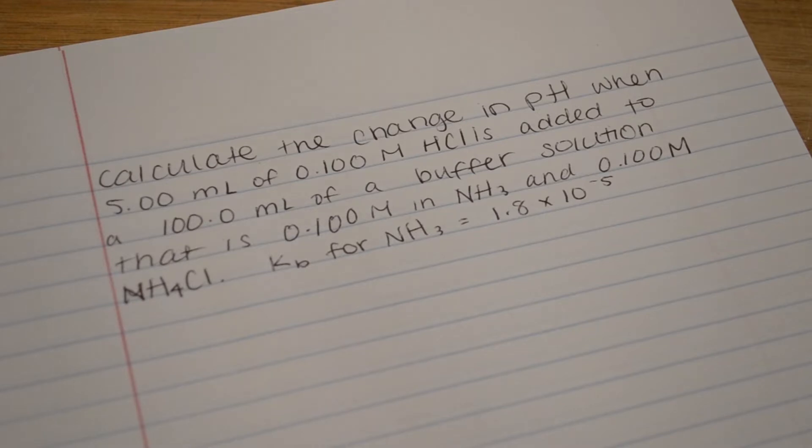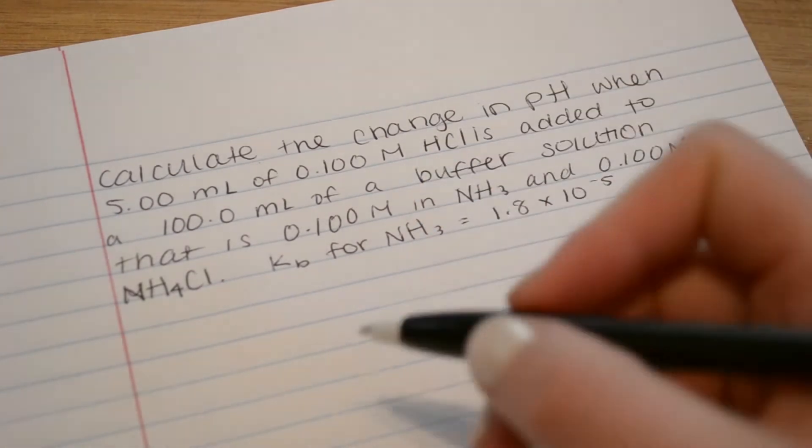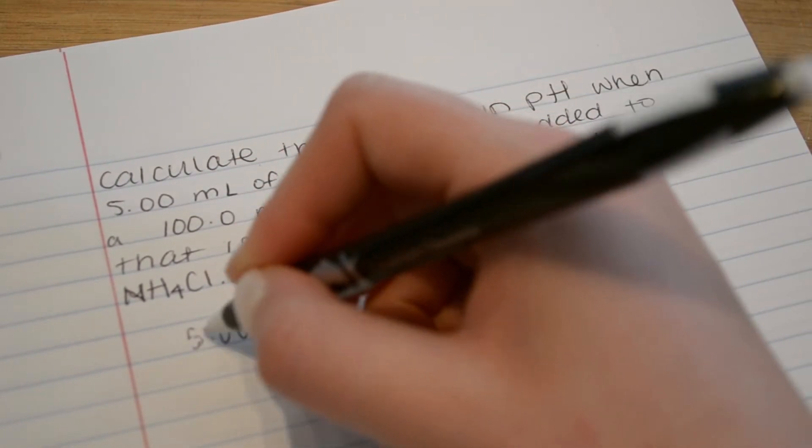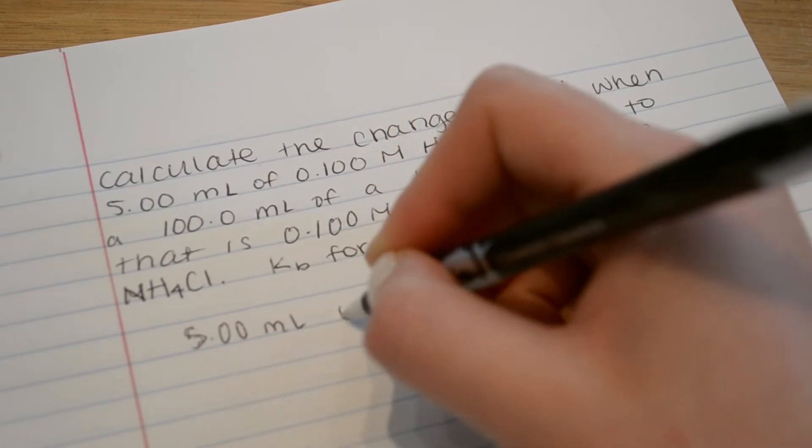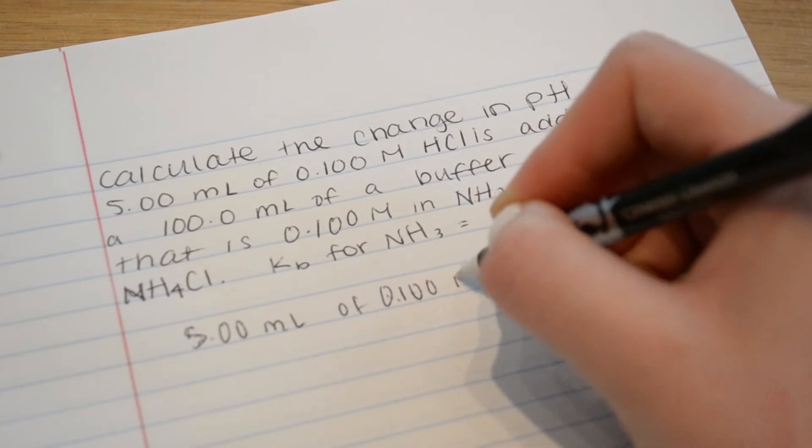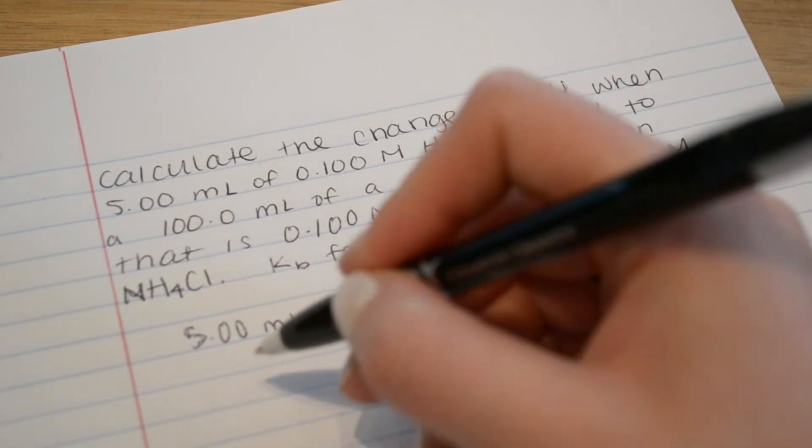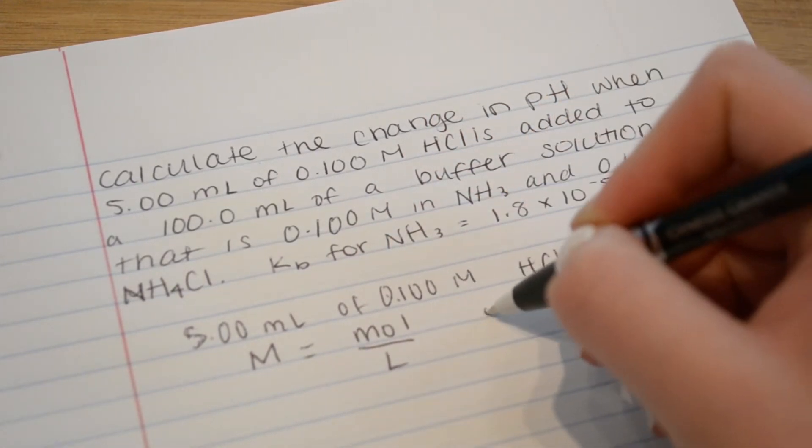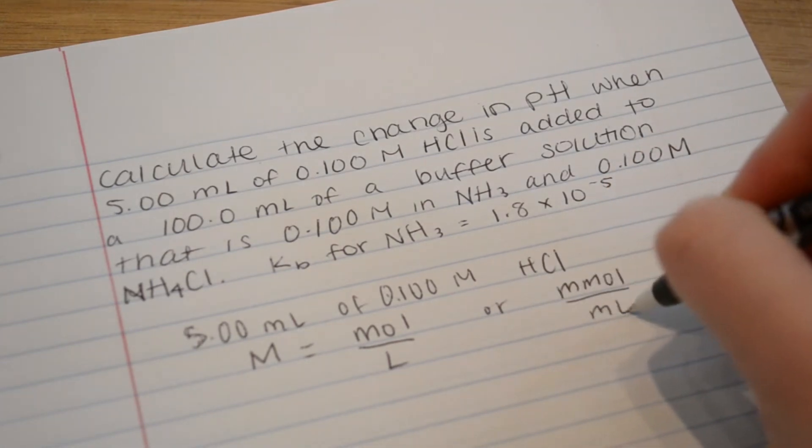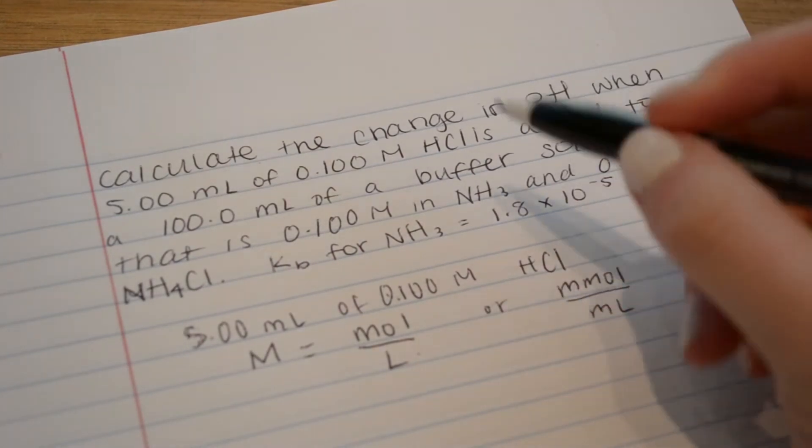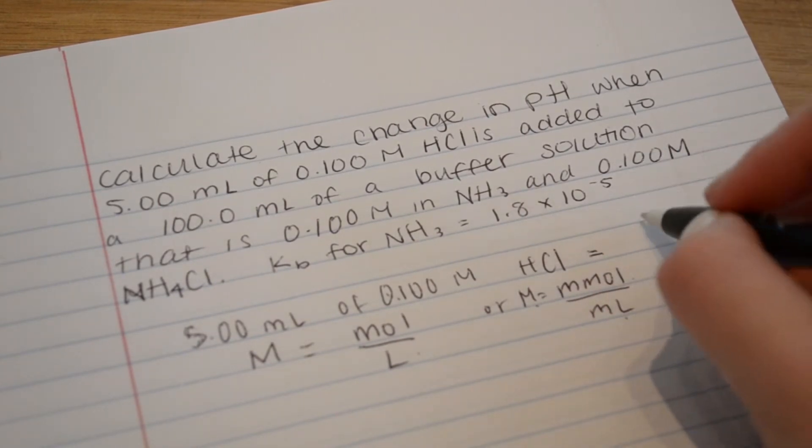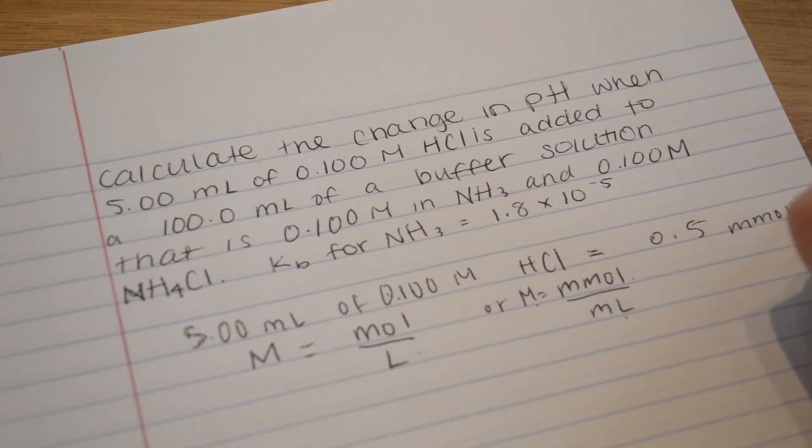So the first thing is to convert the milliliters and molars to millimoles. So I have 5.00 milliliters of 0.100 molar HCl. We remember molarity equals moles per liter or millimoles per milliliter. So to calculate millimoles, we take milliliter times molarity equals millimoles. So we will get 0.5 millimoles of HCl.